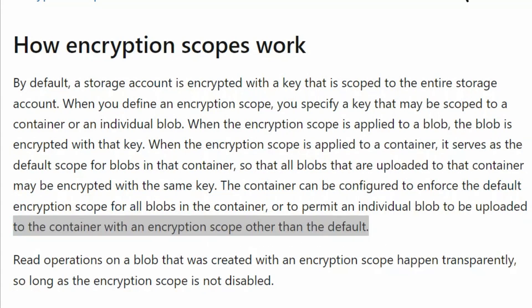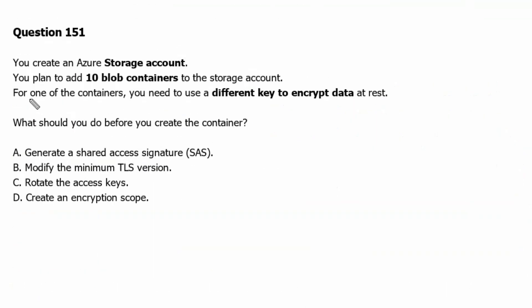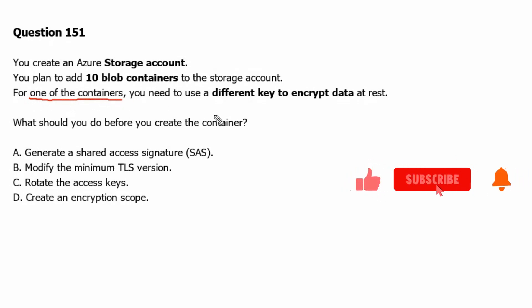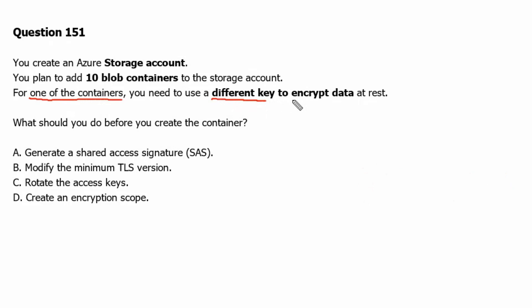Going back to the question: we can define the scope of encryption for one of the containers and it would have a different key to encrypt data. So option D, create an encryption scope, is the correct answer.